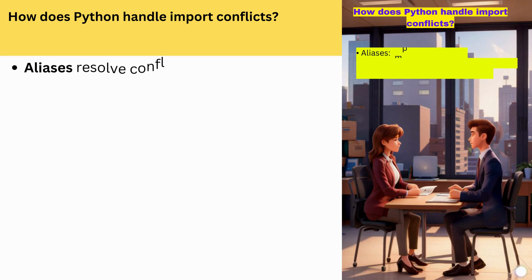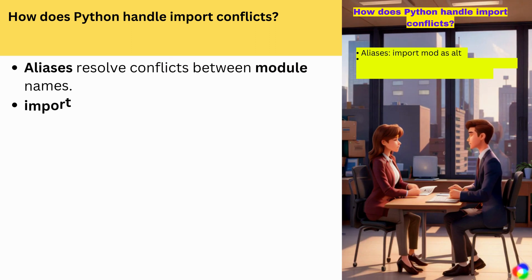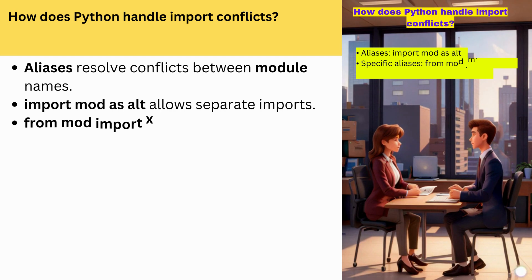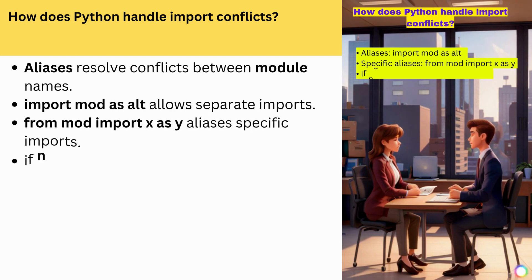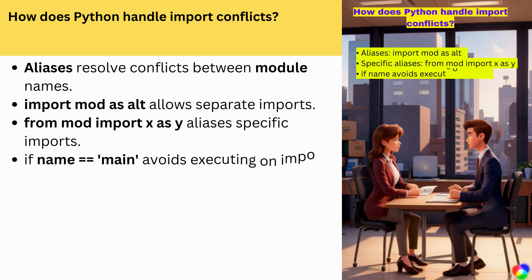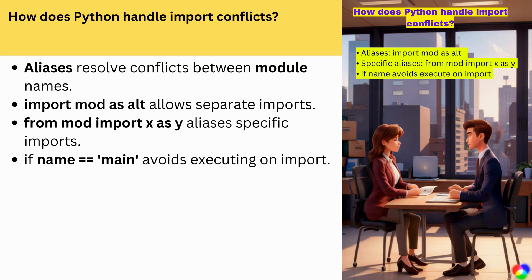How does Python handle import conflicts? Aliases resolve conflicts between module names. 'import mod as alt' allows separate imports. 'from mod import x as y' aliases specific imports. 'if __name__ == __main__' avoids executing on import.